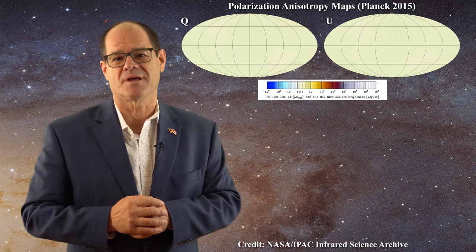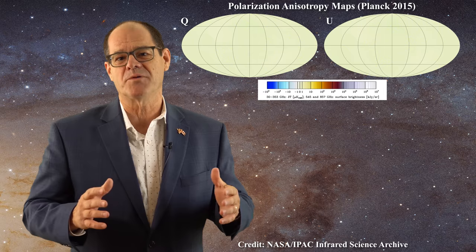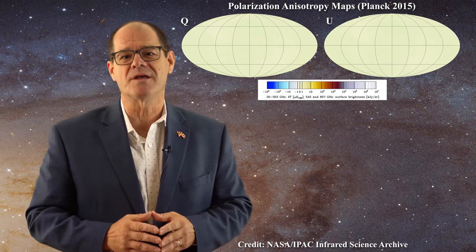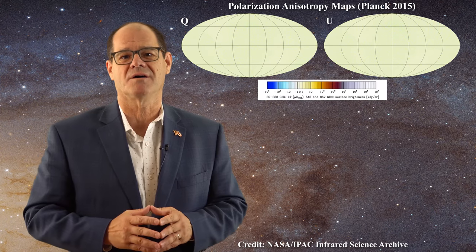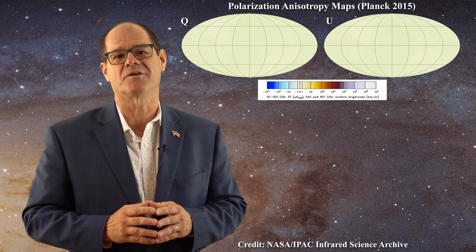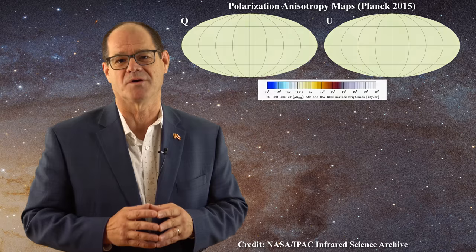Hello everyone and welcome to SkyScholar. In the last video we briefly discussed these two polarization maps from Planck. You recall that the signals in those maps were extremely weak. In fact, the signals were so weak that several viewers believed that the maps were devoid of data. But these two maps do have data, as can be established if the originals are downloaded from the NASA website linked below.